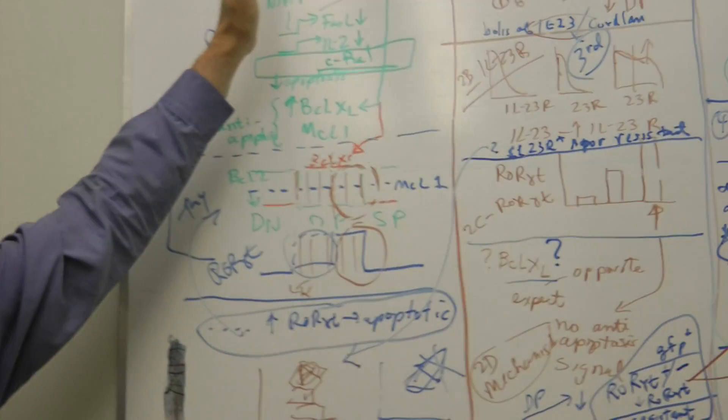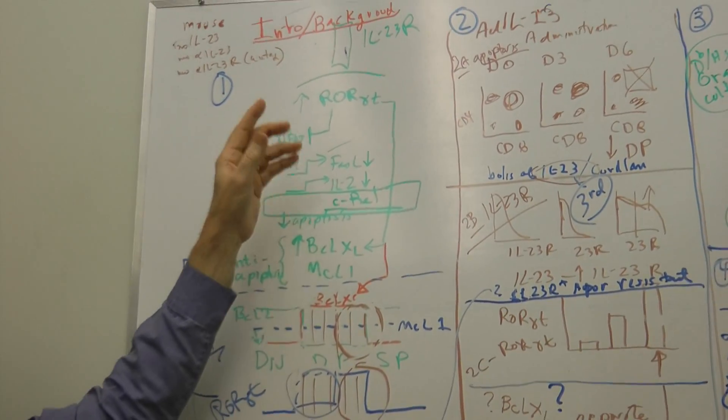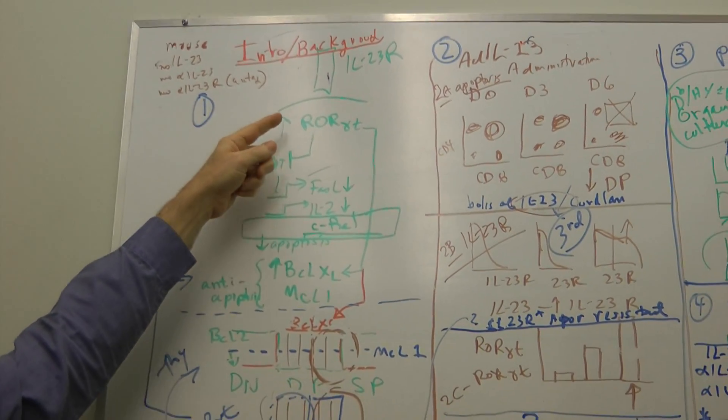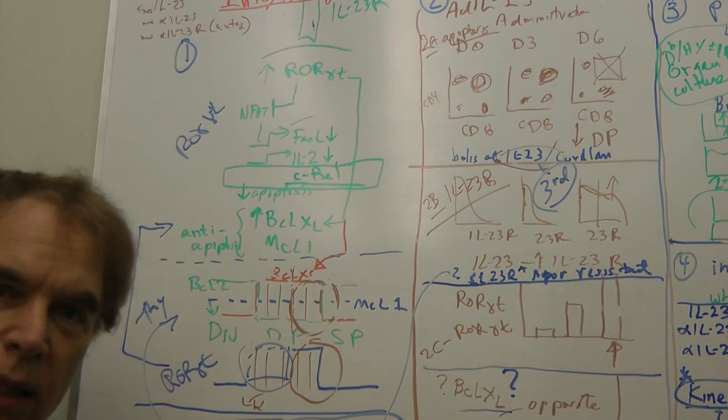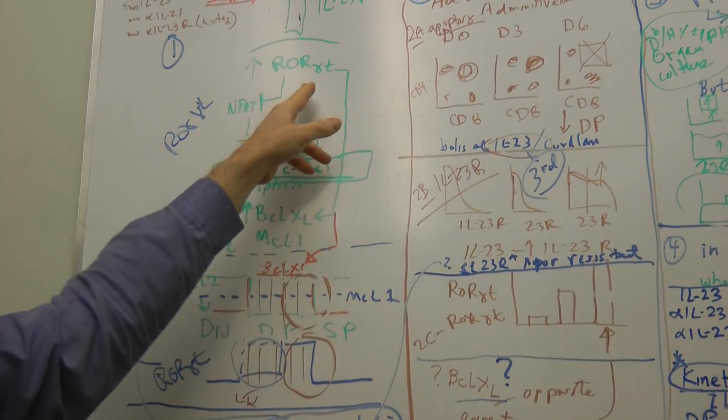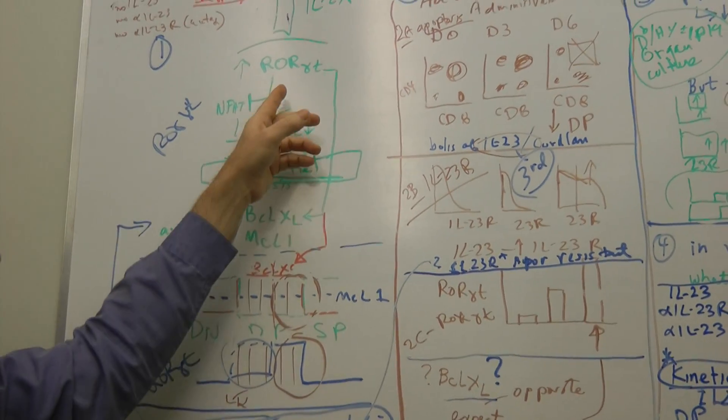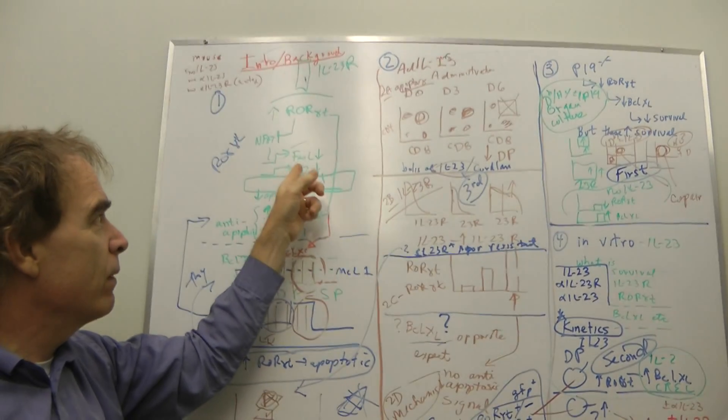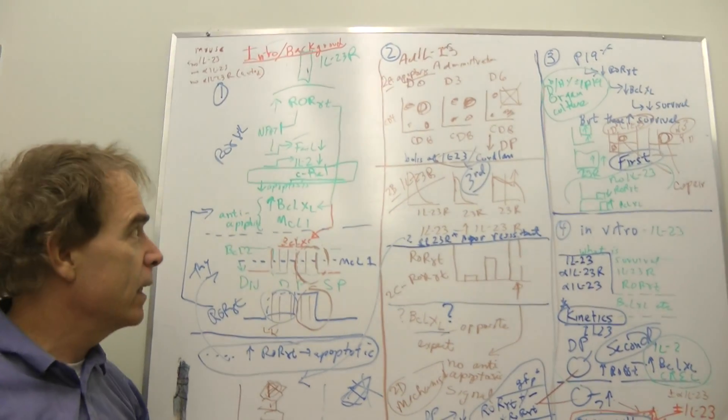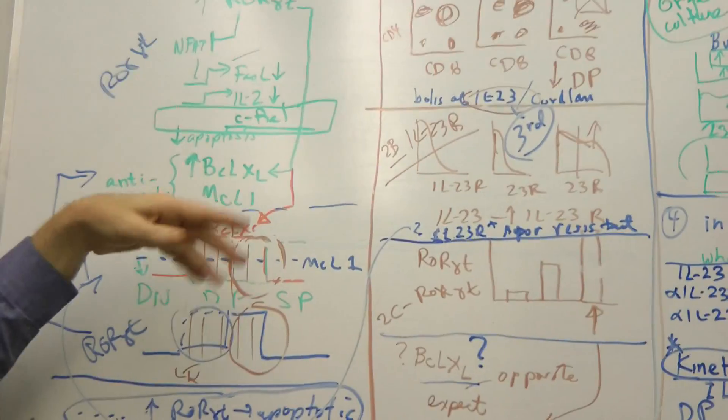One thing that's been missing here is the introduction and background. We want to start with what we know. We don't know anything about IL-23 in the thymus, but we do know ROR gamma T is in the thymus. ROR gamma T probably interferes with NFAP, and that interferes with the transcription of Fas ligand and IL-2 and maybe some other genes.